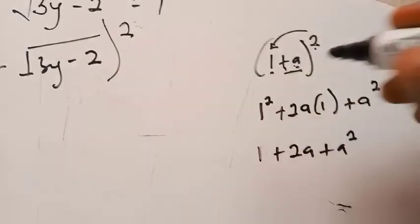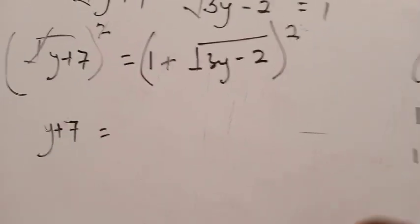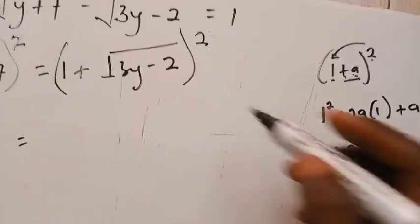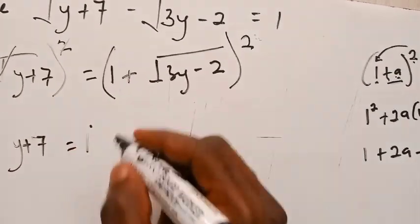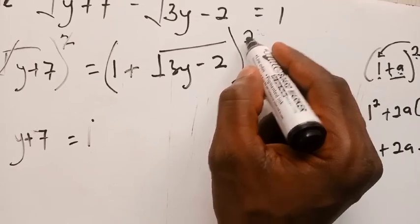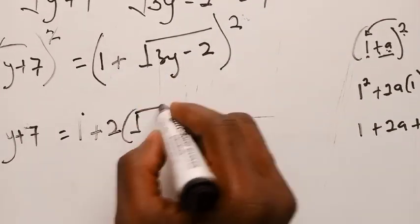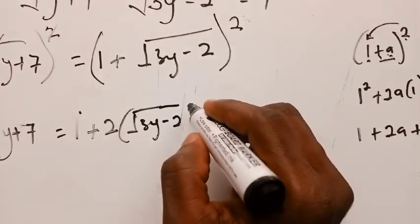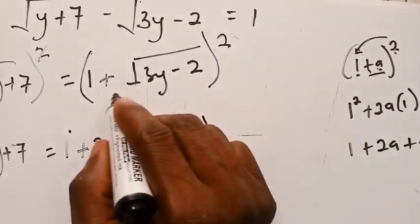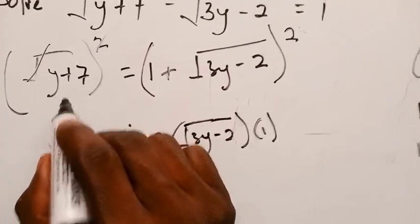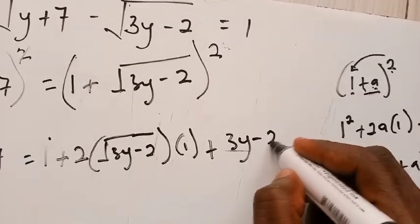Suppose this sign is negative — how are you going to expand that? Bringing this idea to our problem: here you have 1 squared which is obviously 1, then 2 multiplies by everything and by this one — that will be positive 2 times the square root of (3y minus 2). Then finally we square this last part. Squaring the square root of (3y minus 2) gives us positive (3y minus 2). Does it make sense?